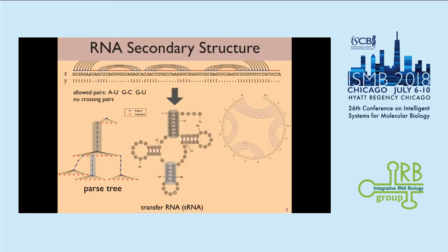Since my presentation is actually the third one today to present RNA secondary structure, I'll just briefly introduce what it is. Basically, RNA secondary structure is a set of base pairing relationships between nucleotides in an RNA sequence. The task is simply: given the sequence, predict its RNA secondary structure. In our work, we only consider base pairing without crossing pairs, and we leave pseudoknot prediction for future work.